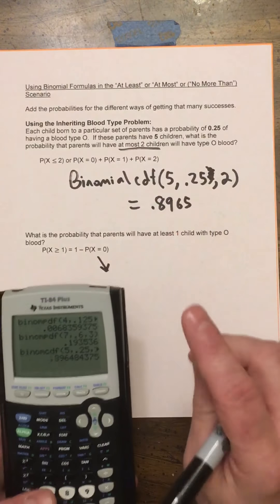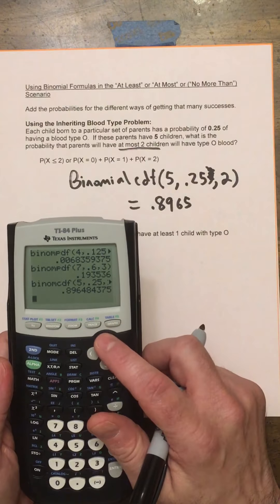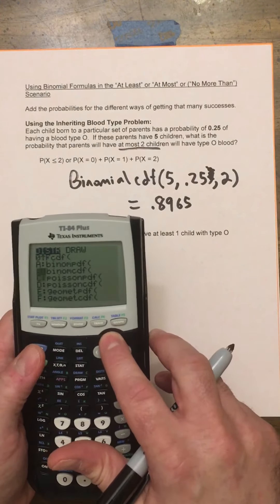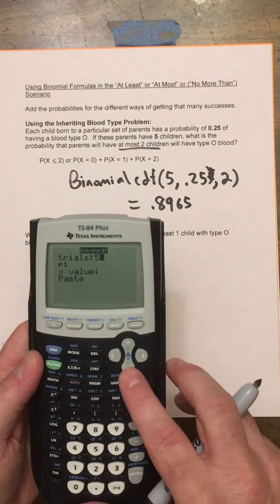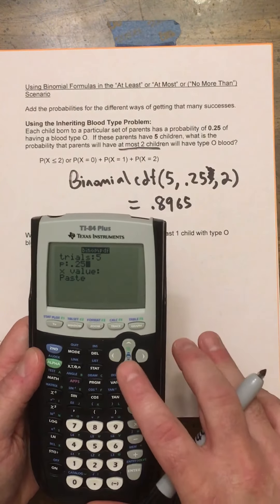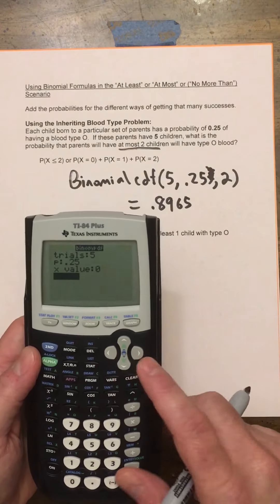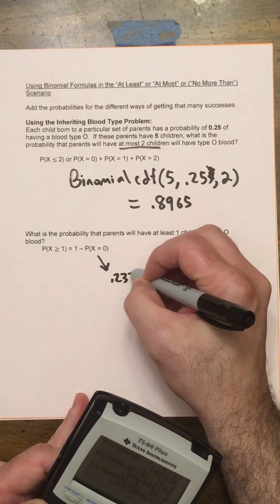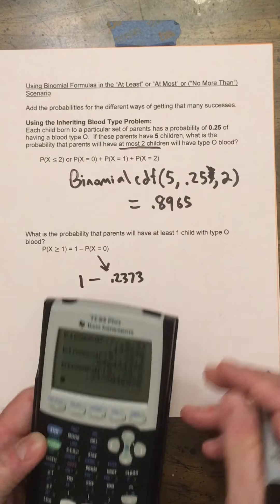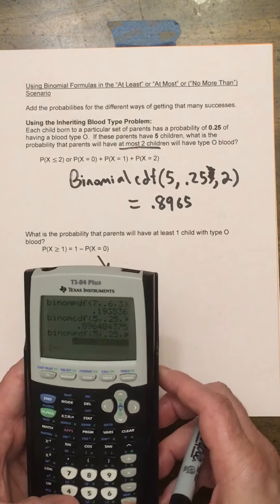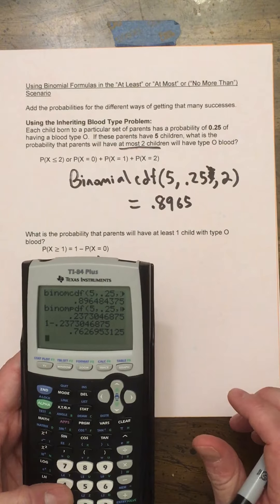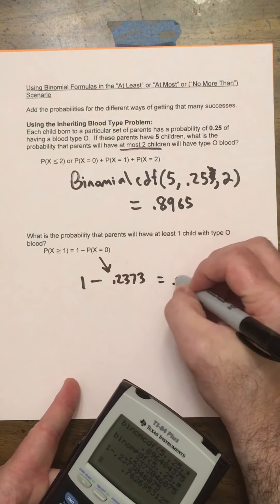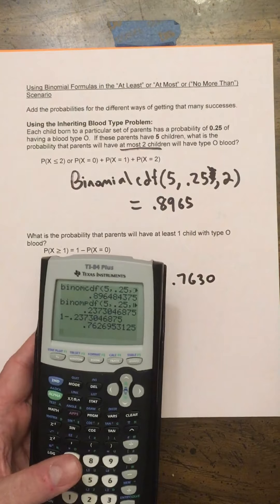So because the calculator counts up from 0, what we're going to have to do is, we're going to have to find that probability. So since that's only a specific probability, we can do binomial PDF. So we'll go back to the distribution, we'll go to binomial PDF. We're going to put in 5 trials with a p-value of 0.25, x-value of 0. That's 0.2373, and 1 minus that is 0.7630.